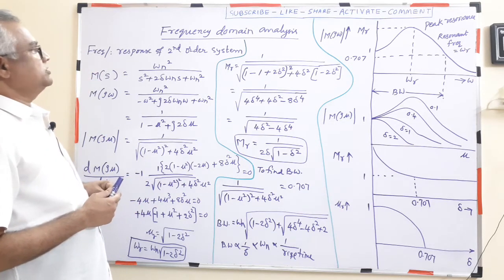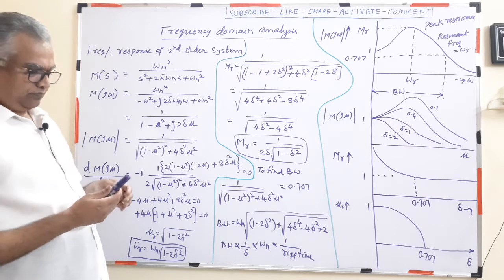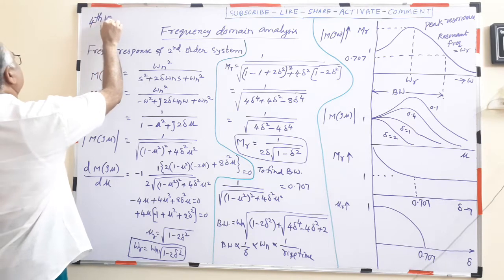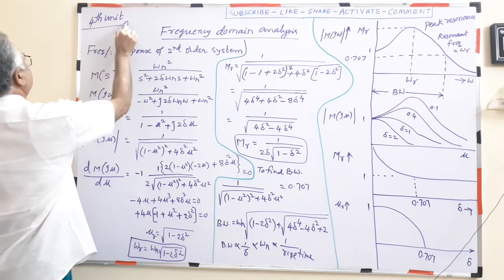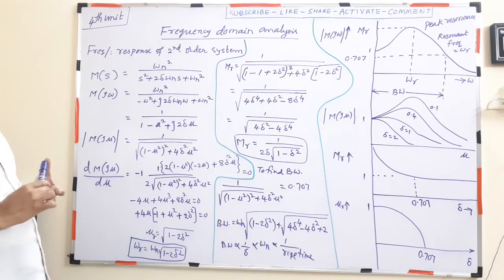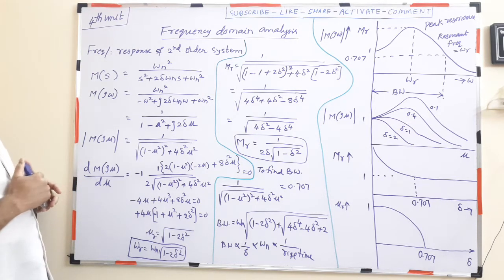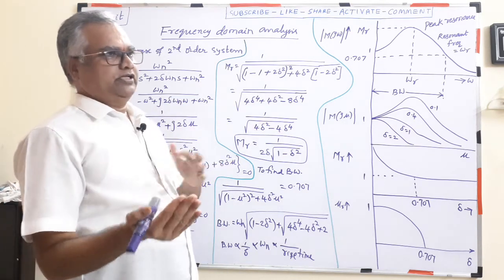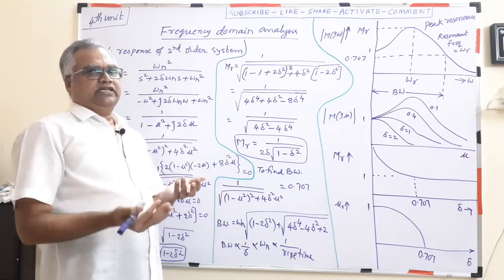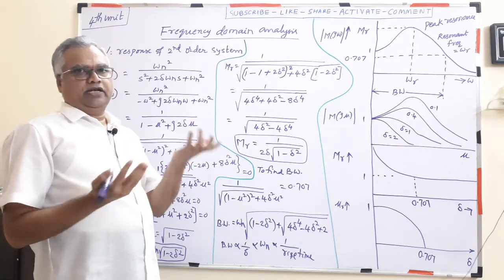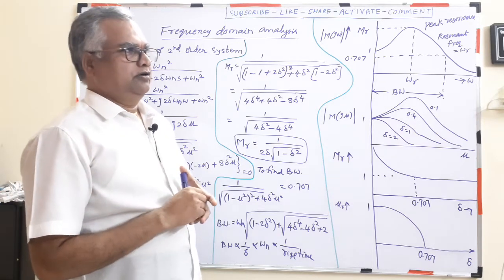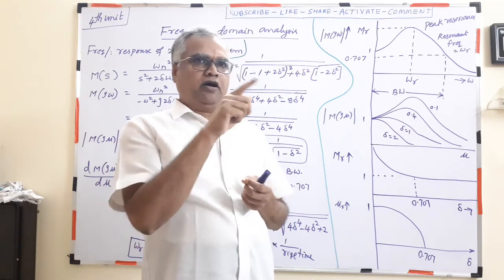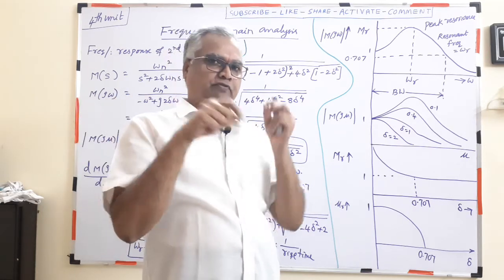We will now study frequency domain analysis, which is in the fourth unit. Frequency domain analysis means: how does gain change with frequency, and how does angle (phase) change with frequency. It is similar to the frequency response experiment of a transistor — like the common emitter amplifier frequency response experiment we perform in the laboratory.